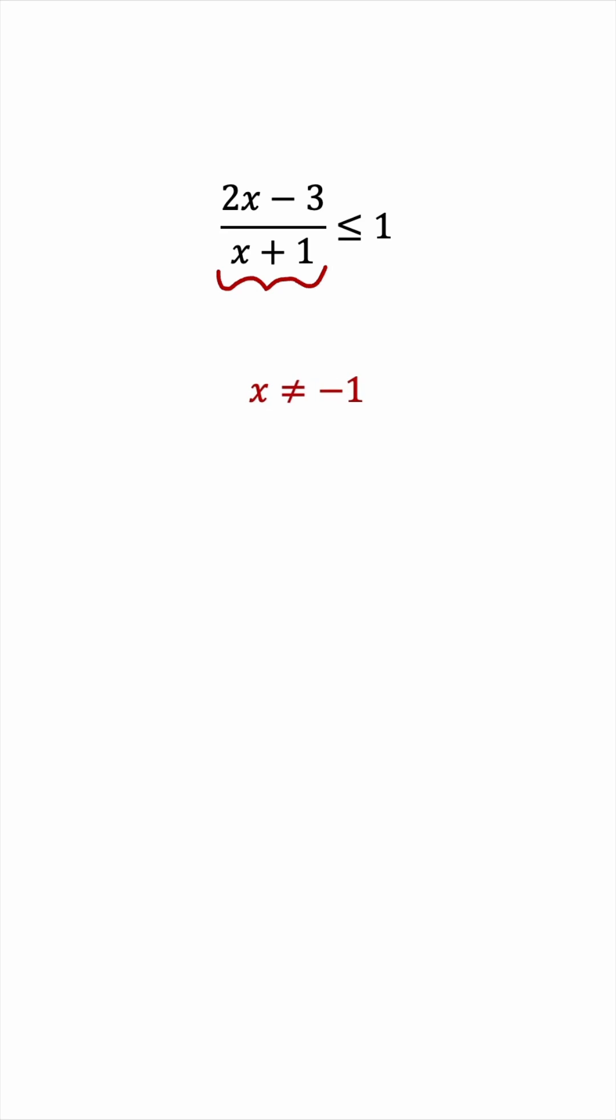Okay, with this, let's proceed. We'll cross multiply, we'll get 2x minus 3 is less than or equal to x plus 1. We'll take all the x terms to one side and all the constants to the other, and this will give us x is less than or equal to 4.